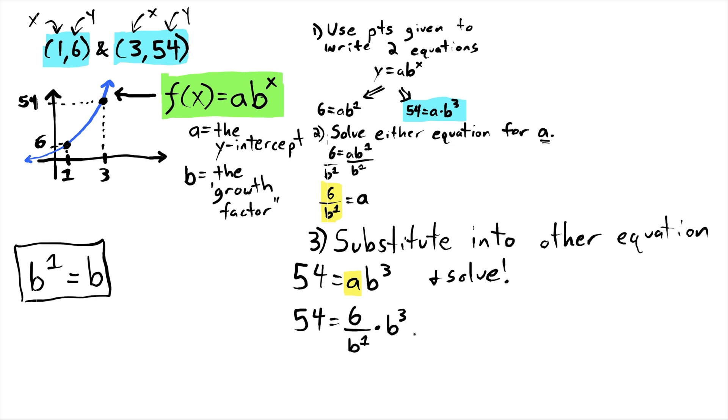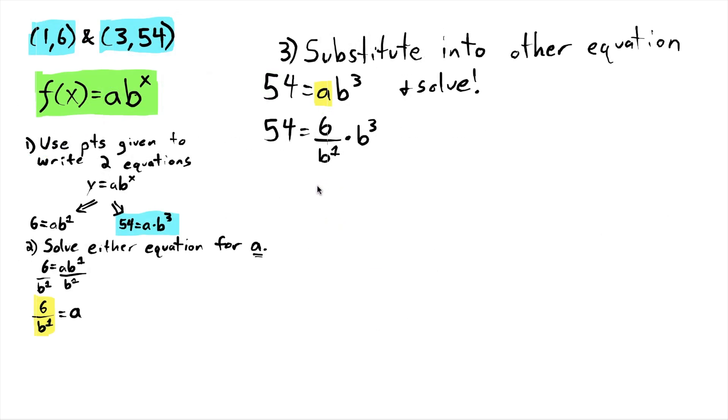I want to solve this for b. And I want a little more room to do that. So I could take this right side, and I could write it as one big fraction. And I could rewrite that as 54 = 6b^3/b. And if you think about exponents and what this means algebraically, what happens is that these two are going to cancel each other out. You just end up with two b's by itself, b squared.